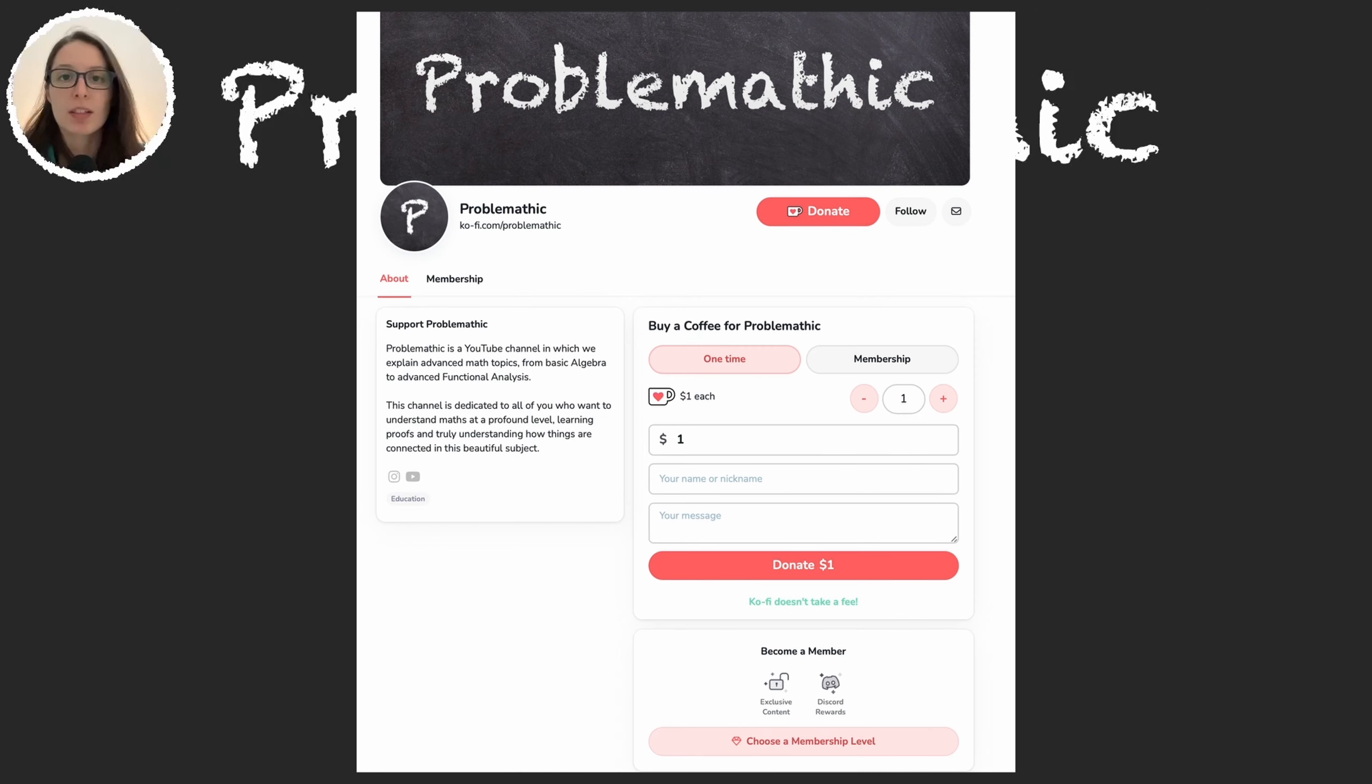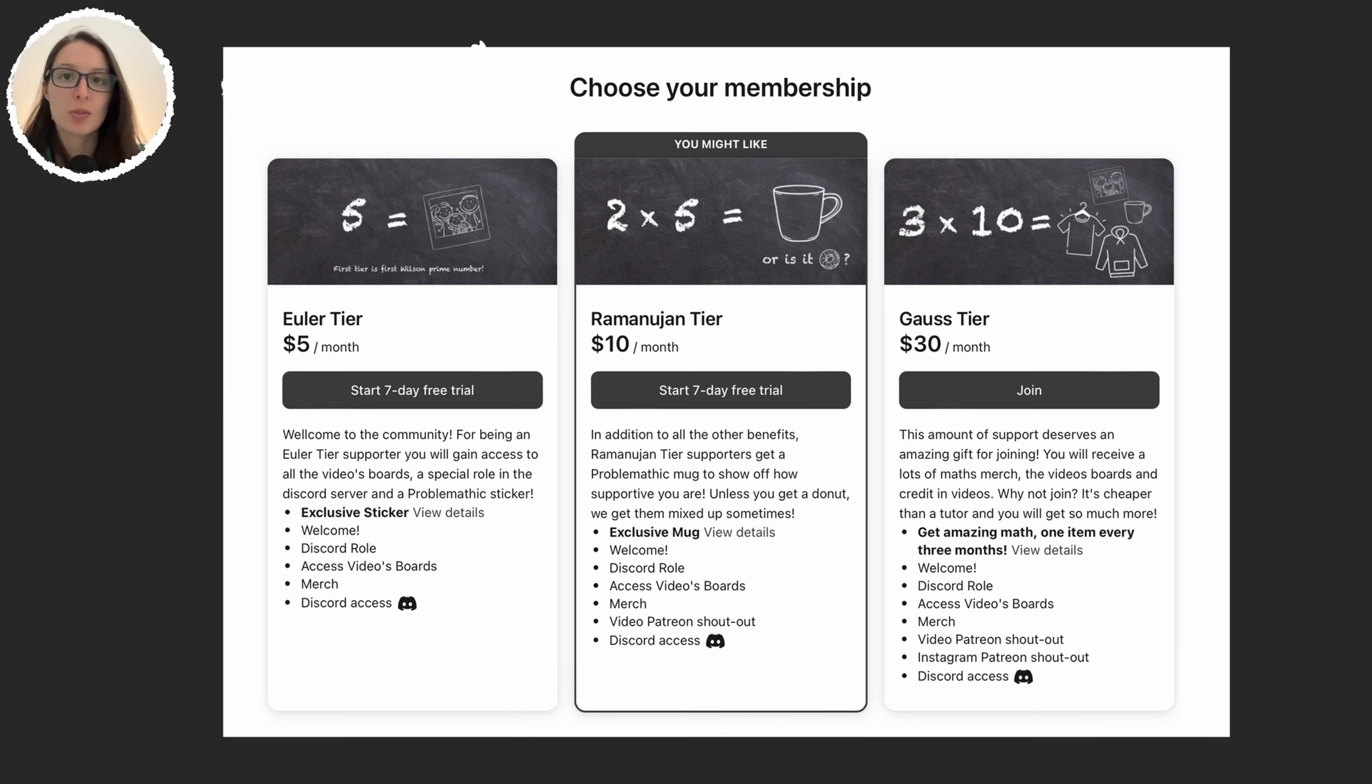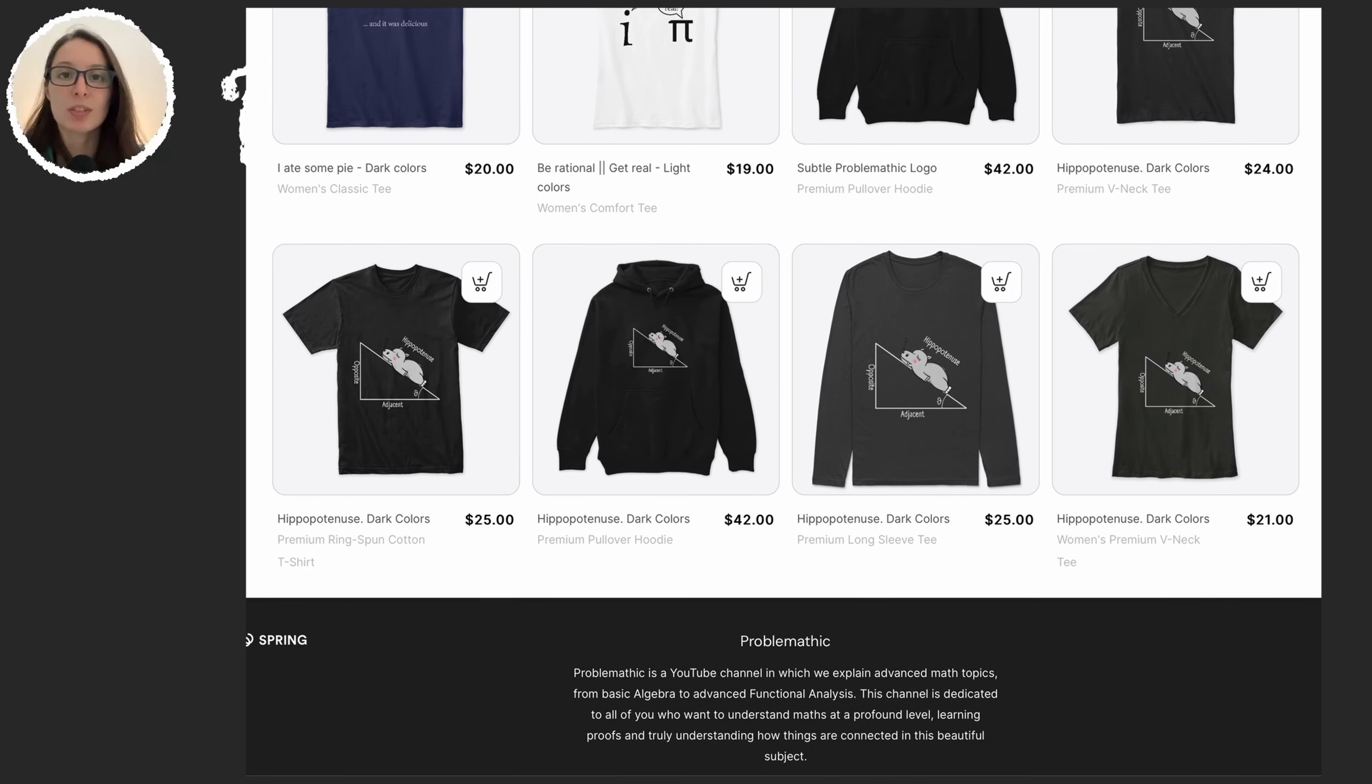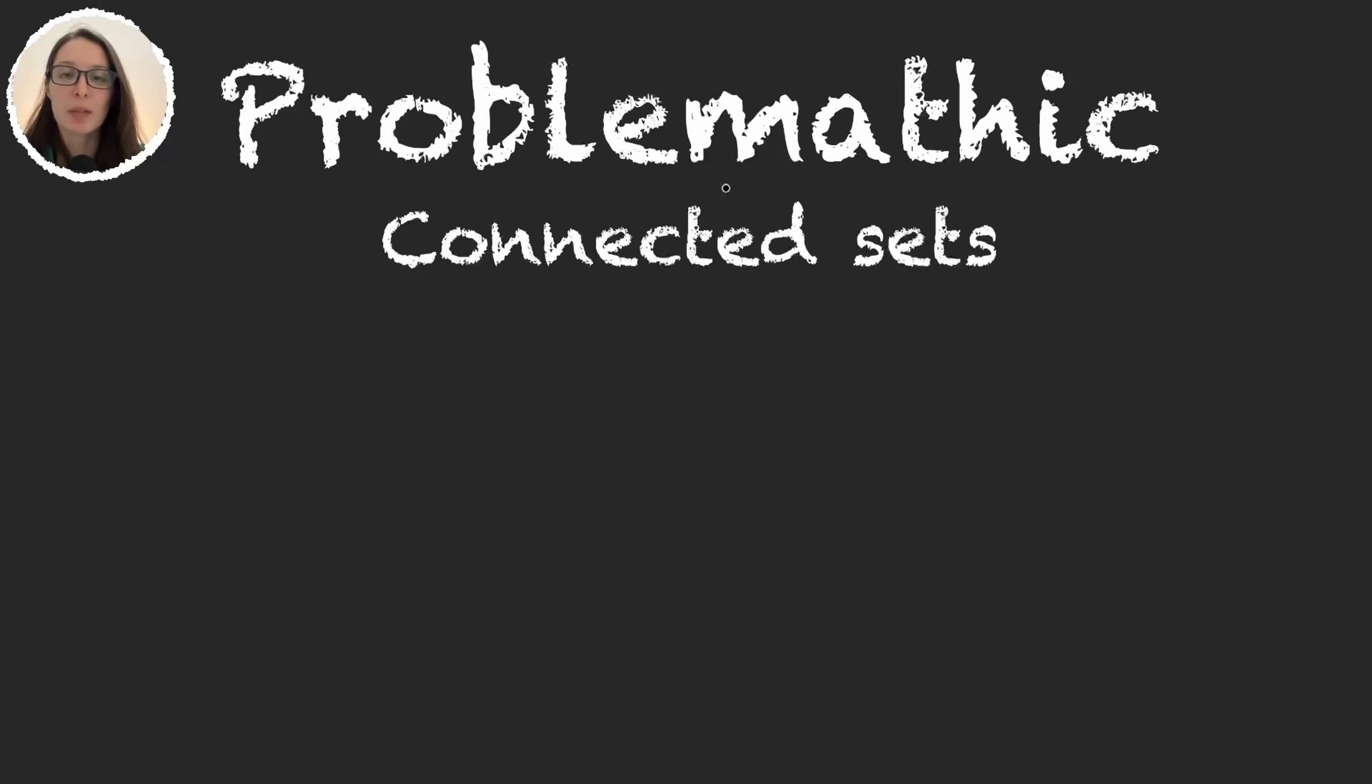You can either donate and become a member on Ko-fi to get access to exclusive content. If in addition to that content you also want to get mathematics merchandising then you can become a subscriber on Patreon. And if all you want is the merchandising then you can buy t-shirts in our store. Let's continue with the video.